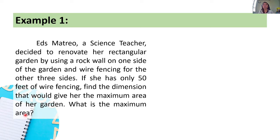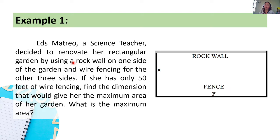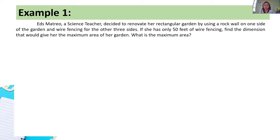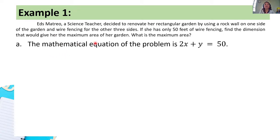When solving this problem, we need to analyze the given situation and visualize it. One side of the rectangular garden is a rock wall, so only the three remaining sides will use the wire fencing. Step 1: the mathematical equation is 2x + y = 50, since the two widths (x) and one length (y) must equal the 50 feet of available fencing.